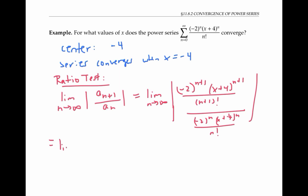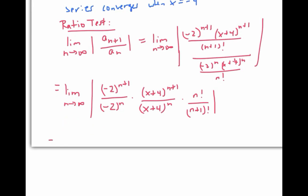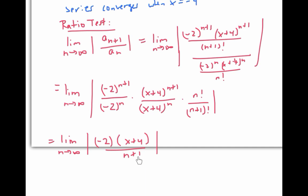Let's simplify by flipping and multiplying and rearranging a little. After canceling, we get the limit of the absolute value of −2(x+4) divided by (n+1). The numerator doesn't depend on n, so it stays fixed as n goes to infinity, but the denominator goes to infinity. Therefore we're dividing some fixed constant by larger and larger numbers, and so this limit equals zero. The limit doesn't depend on x's value — it's always zero no matter what x is. So by the ratio test, since zero is less than one, the series converges for all values of x.